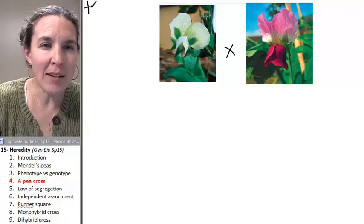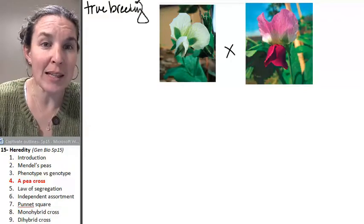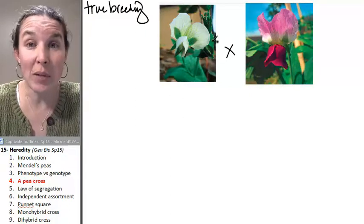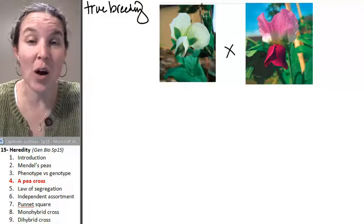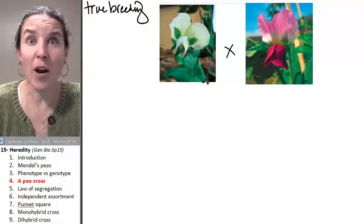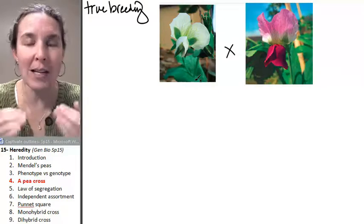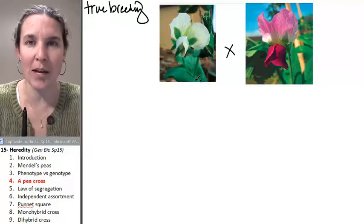And by that, a true breeding line of plants just meant that if you crossed this white plant with another white plant, you got white plants. And forever, no matter who you crossed with who, you always ended up with baby white plants.